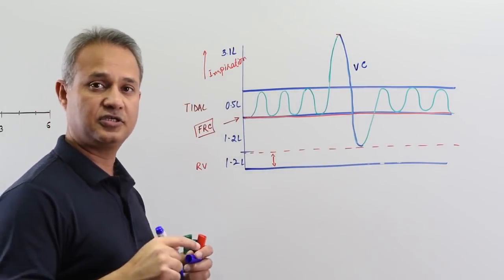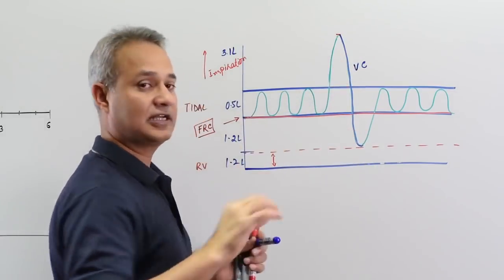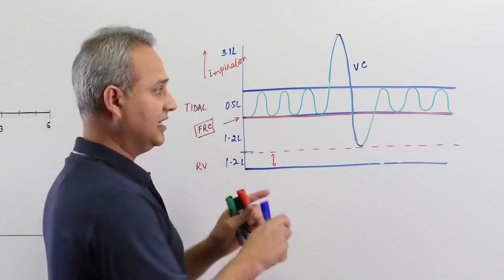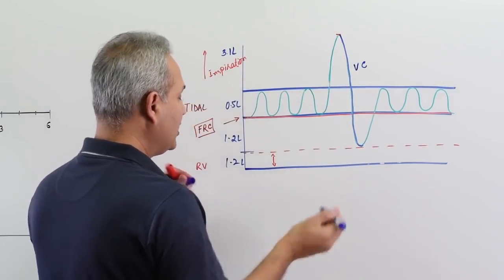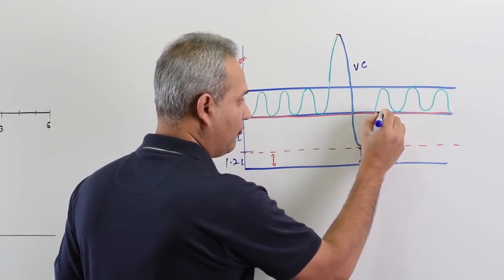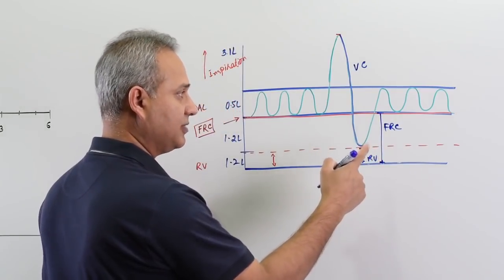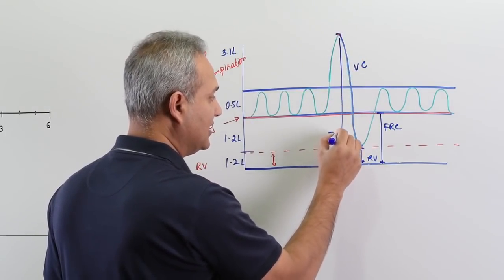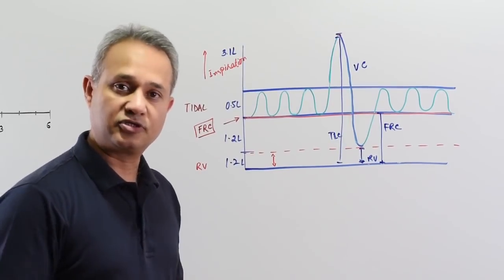In today's discussion, vital capacity is what is really important. We will be talking about vital capacity throughout the lecture and the changes to it in various lung pathologies. The volumes and capacities to keep an eye on are: residual volume, functional residual capacity (FRC), vital capacity itself, and total lung capacity (TLC). We will talk about what happens as we do spirometry on patients.